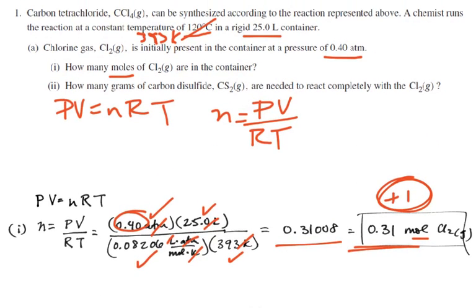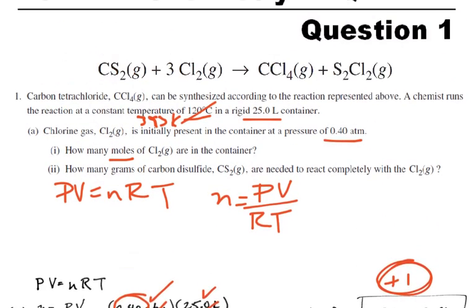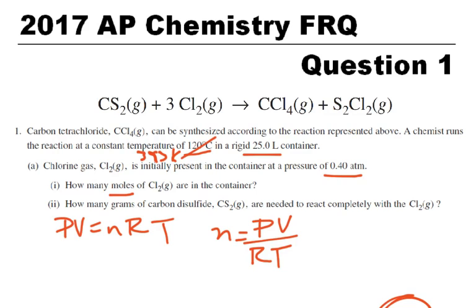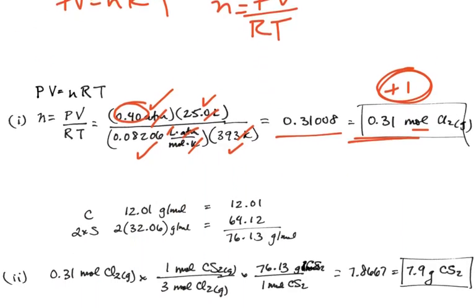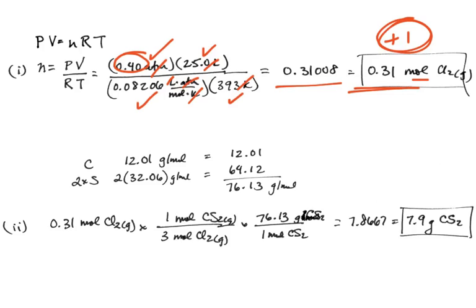The second part says: how many grams of carbon disulfide are needed in order to completely react with the chlorine? I can see there's a three-to-one ratio here, and it's a pretty simple stoichiometry problem. First, I calculate the molar mass of carbon disulfide and get 76.13 grams per mole.